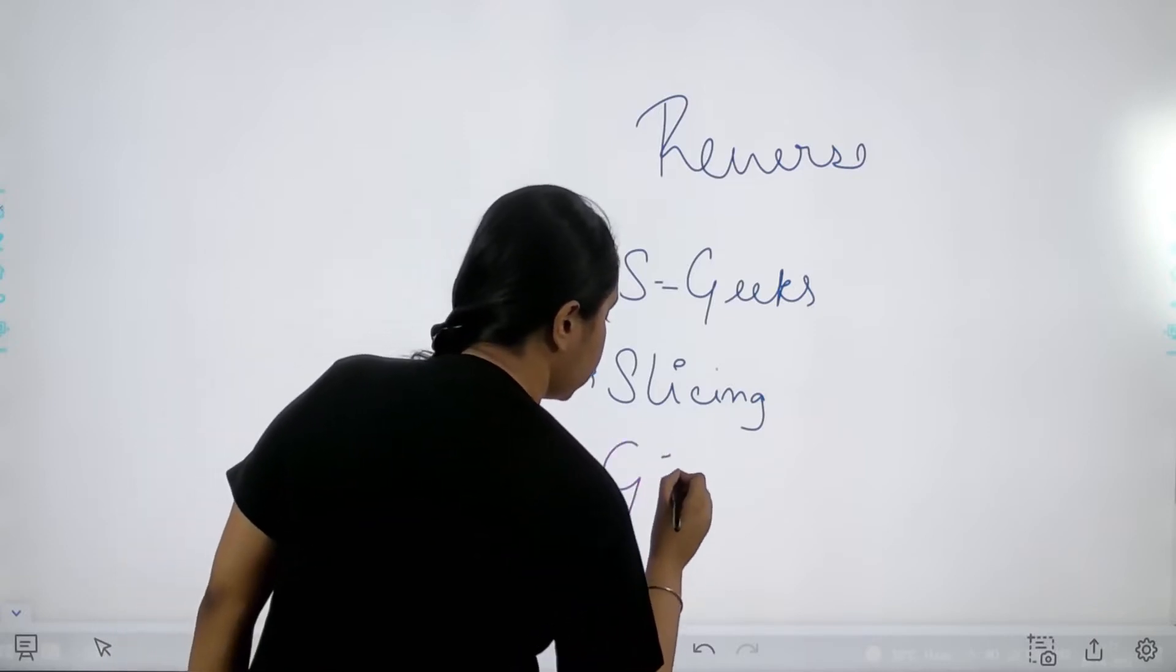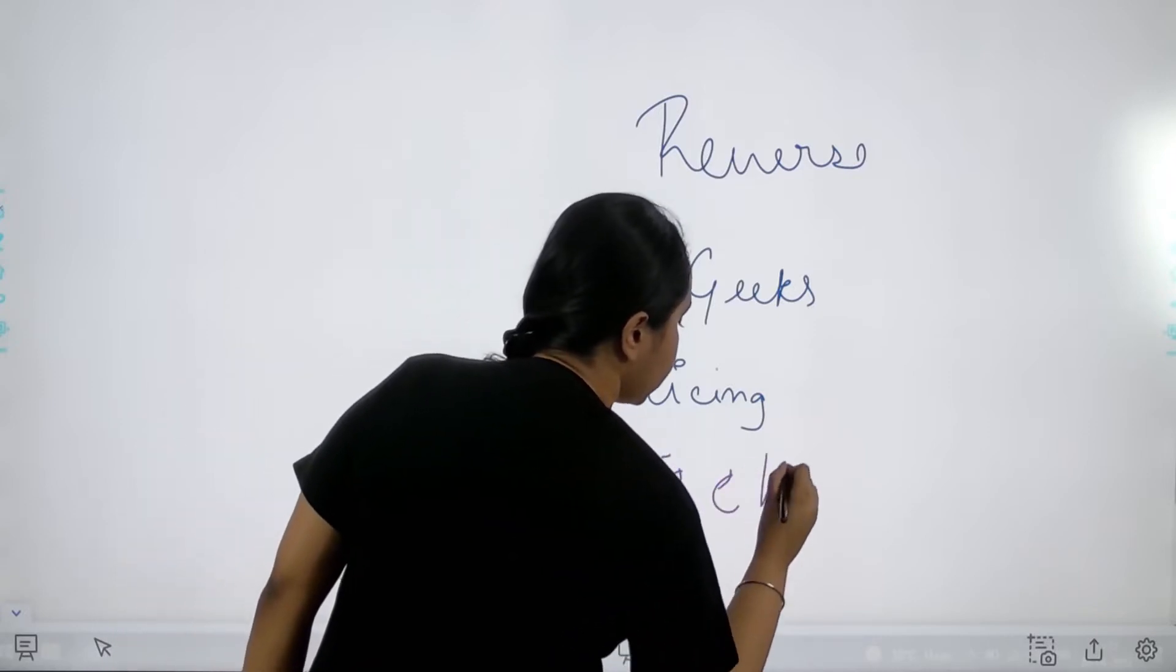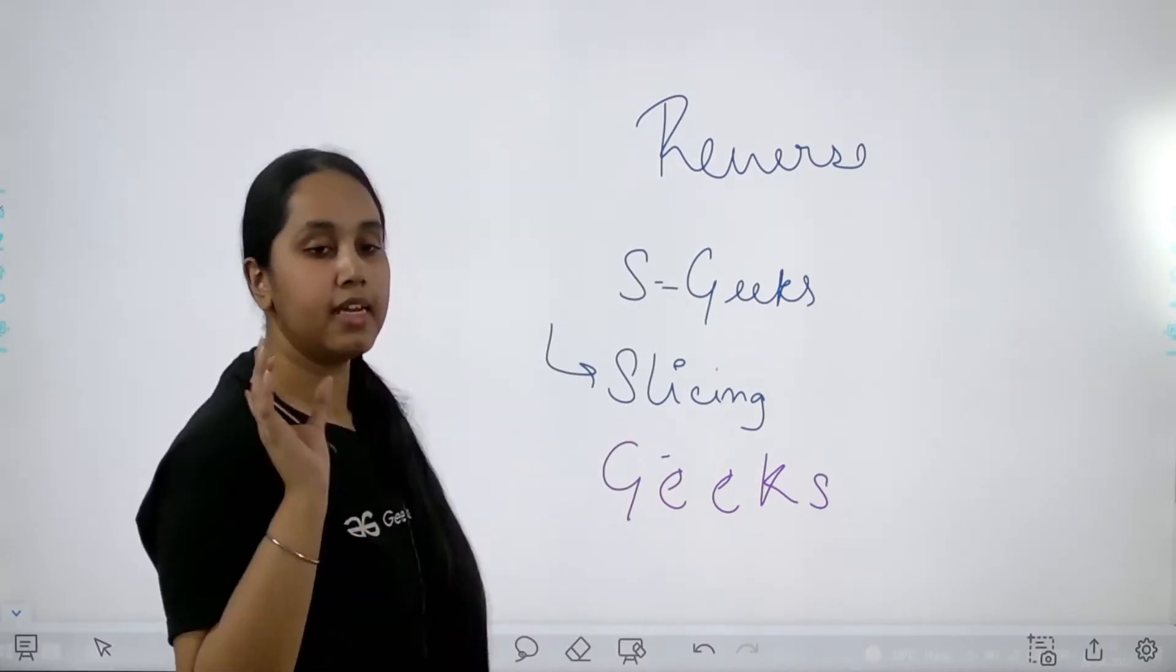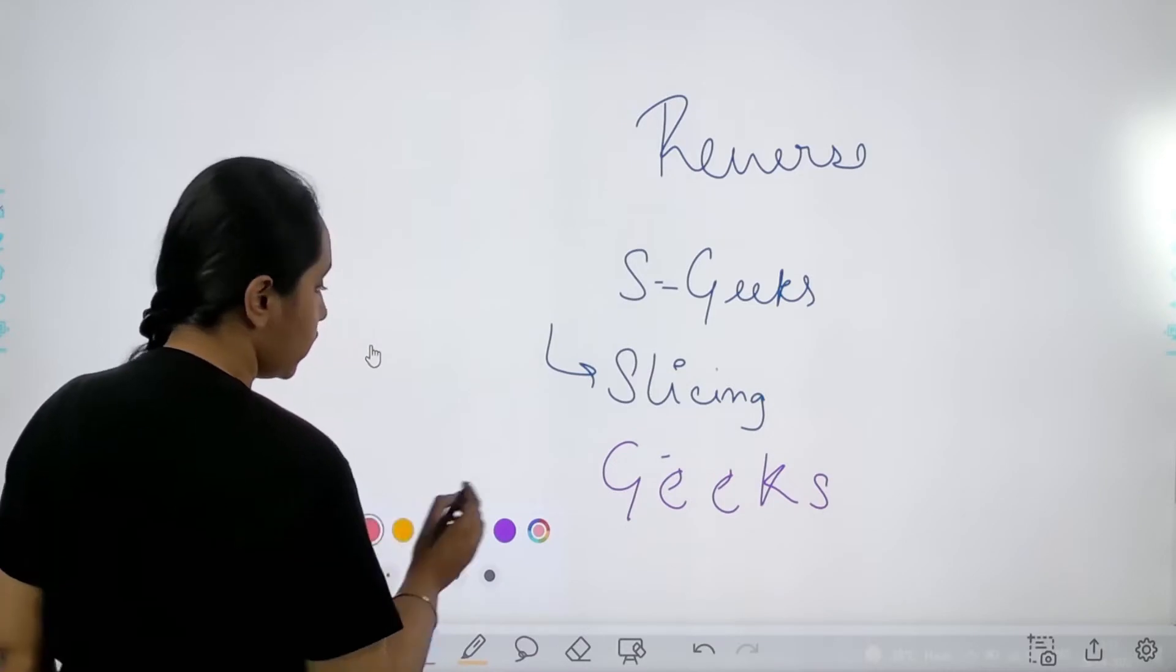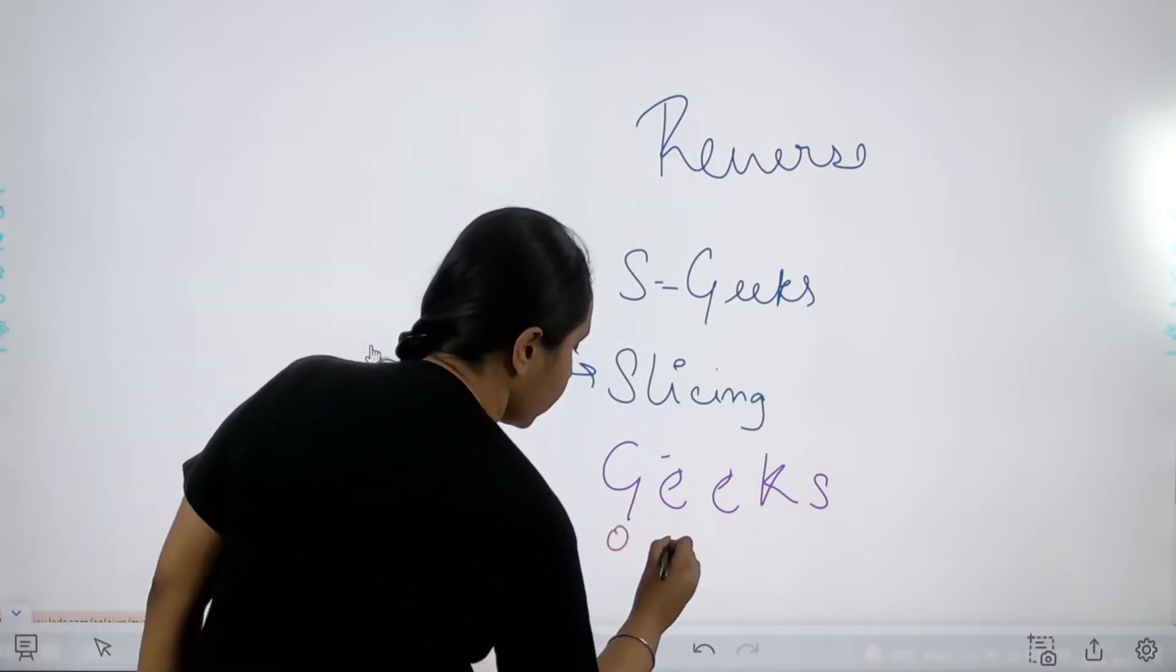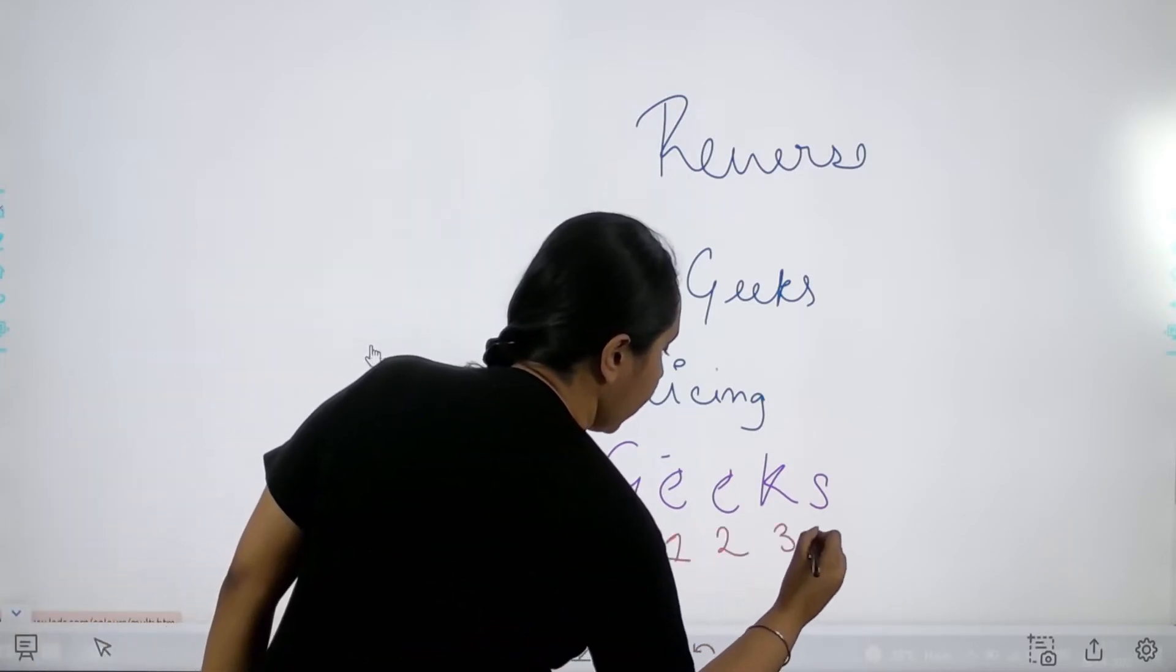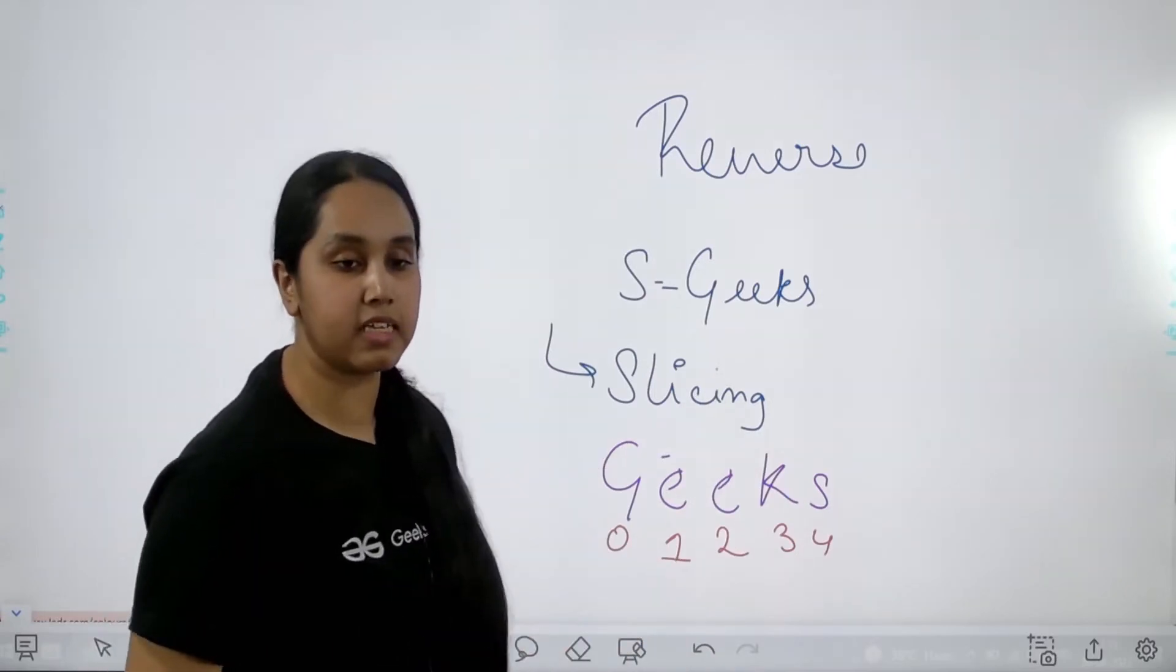I am given a string geeks, right. Now I would just tell you what are the index value of each and every component here. The index value for g is 0, then 1, 2, 3 and 4. 4 is the last index value.